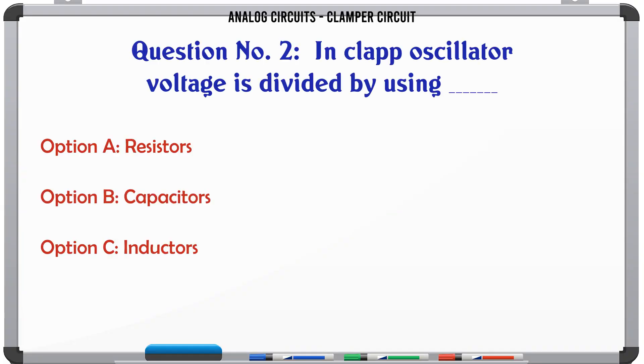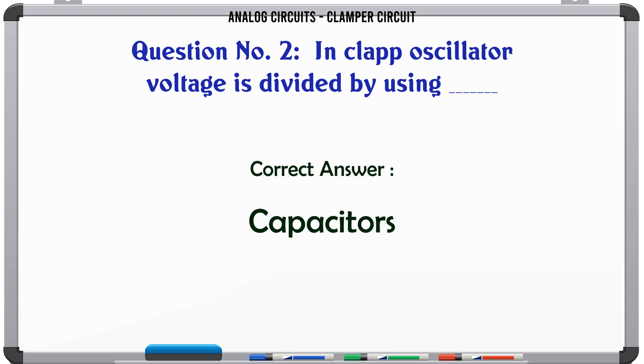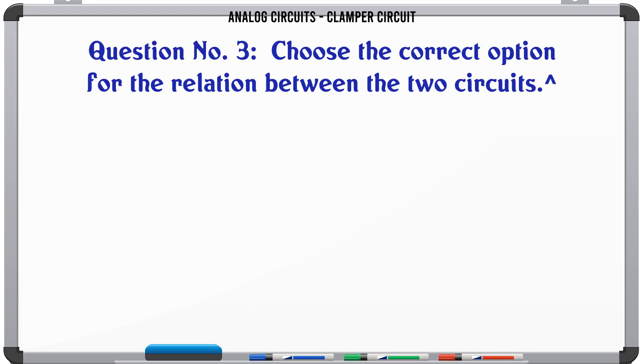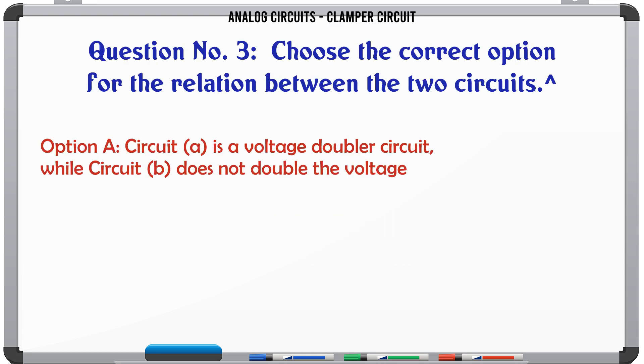In a clap oscillator, voltage is divided by using: A: resistors, B: capacitors, C: inductors, D: voltage dividing circuits are not used. The correct answer is capacitors.